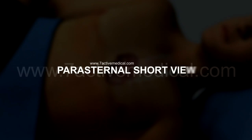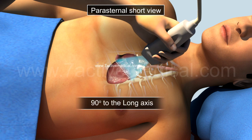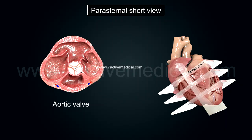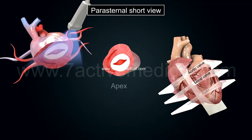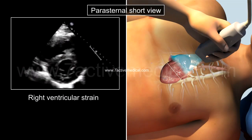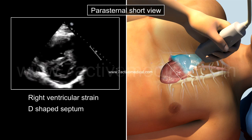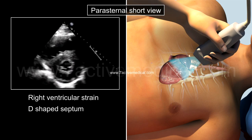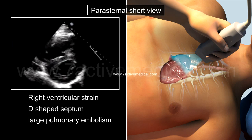2. Parasternal short view is used to estimate right ventricular strain. The probe is rotated clockwise 90 degrees from the long axis and viewed at three levels: at the aortic valve, known as the Mercedes-Benz sign; at the mitral valve, known as the fish mouth sign; and at the apex with the papillary muscles. Right ventricular strain, in which right ventricular pressure exceeds left ventricular pressure, is denoted by a D-shaped septum caused by bowing of the interventricular septum into the left ventricle, typically seen with a large pulmonary embolism.